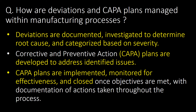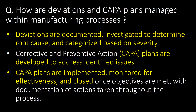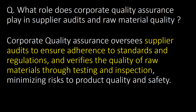How are deviations and CAPA plans managed within manufacturing processes? Deviations are documented and investigated to determine root cause, and categorized based on severity. Corrective and Preventive Action (CAPA) plans are developed to address identified issues. CAPA plans are implemented and monitored for effectiveness, and closed once objectives are met, with documentation of actions taken throughout the process.